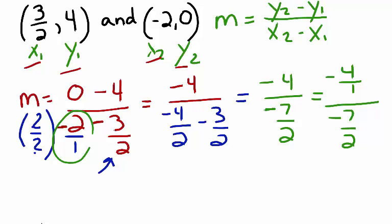When we divide fractions, we can't divide them directly. We have to multiply one by the reciprocal of the other. So negative 4 over 1, we're going to keep it the way it is. And we're going to take the fraction on the bottom, this negative 7 halves, and flip it to its reciprocal, negative 2 over 7.